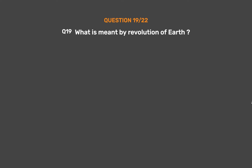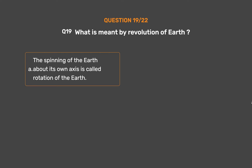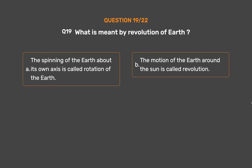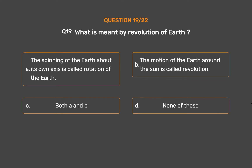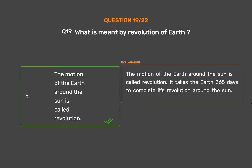Question number 19. What is meant by revolution of Earth? Option A: The spinning of the Earth about its own axis is called rotation of the Earth. Option B: The motion of the Earth around the sun is called revolution. Option C: Both A and B. Option D: None of these. The correct answer is Option B. The motion of the Earth around the sun is called revolution. It takes the Earth 365 days to complete its revolution around the sun.